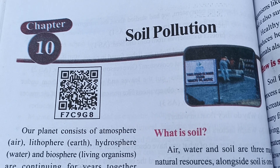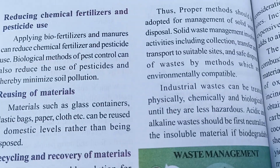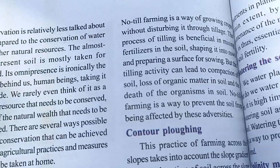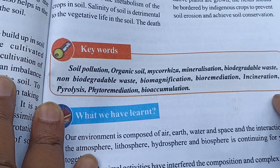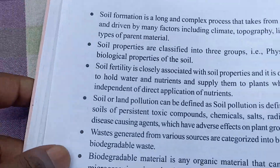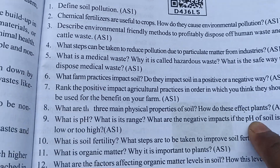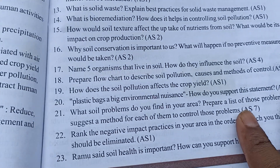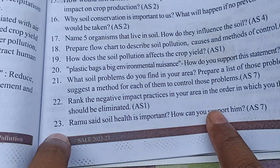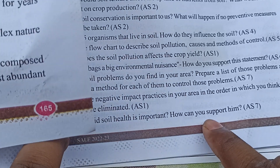So first of all let's see the question, then after we will move to the answer. This is our chapter. If you come here you can see the keywords. We will see the keywords, then what you have learned — this is our question section. In 'Improve Your Learning' there is a total of 23 questions given. We will discuss all 23 questions and also see some activities.